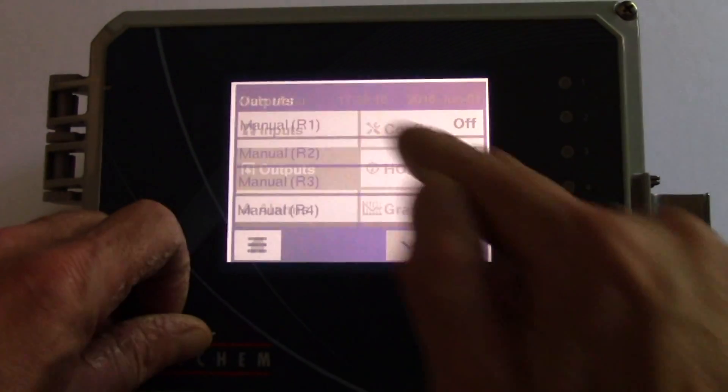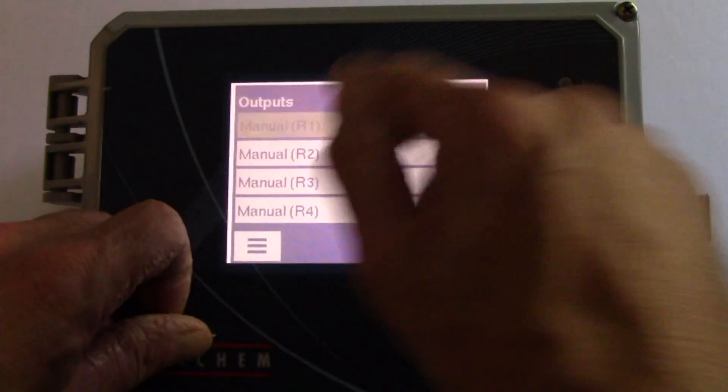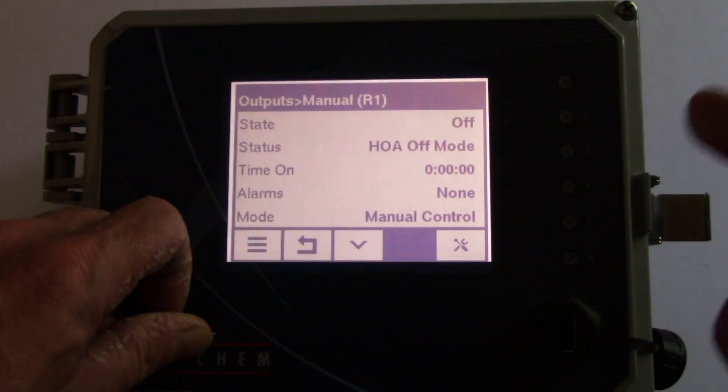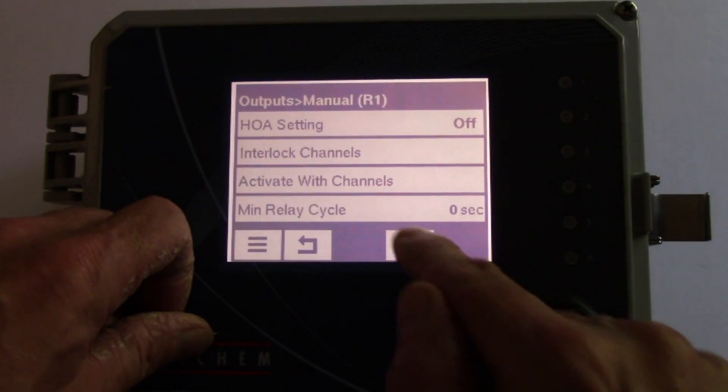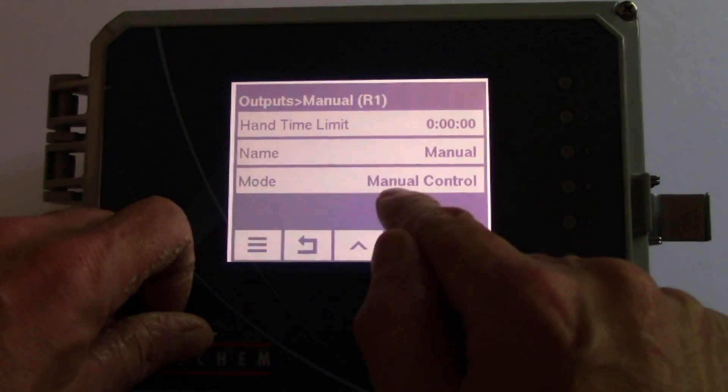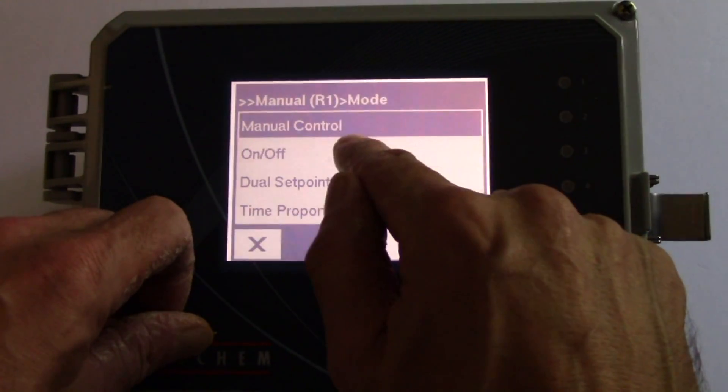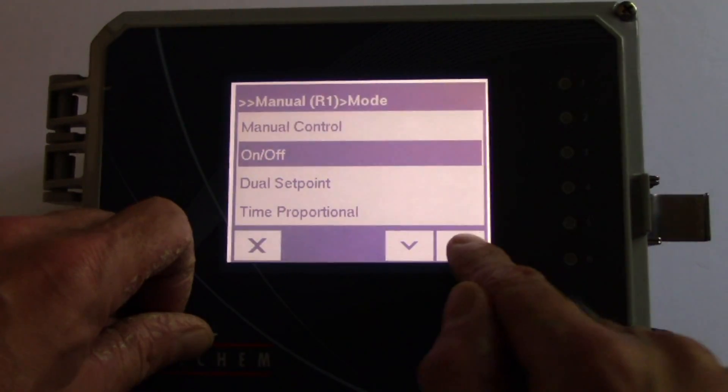For the relays, press outputs. For this example, the bleed valve is wired into relay 1, so I'll hit the settings, go down to the mode, I'll make sure it's on offset point, and then hit check.